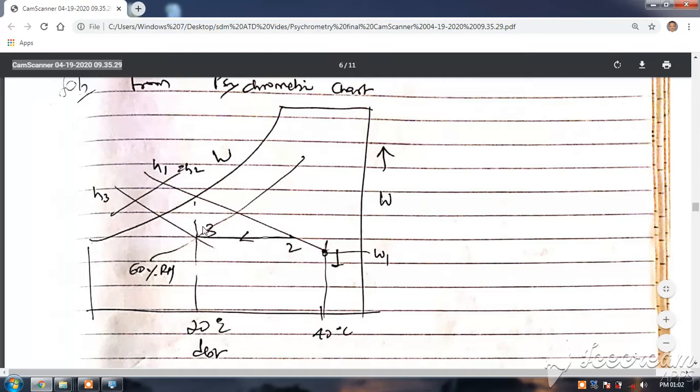This inclined line is cutting this vertical point 1. Similarly now, 60 percent relative humidity and 20 degrees centigrade, so this is point 3. We have to do this is the line which is connecting.